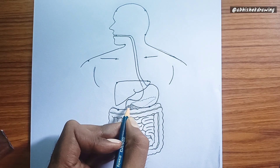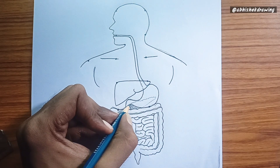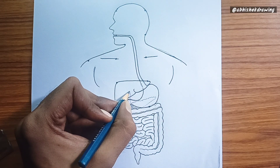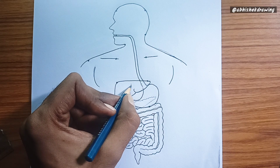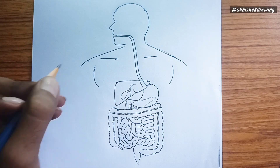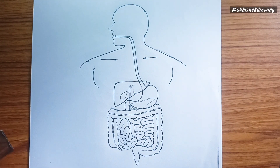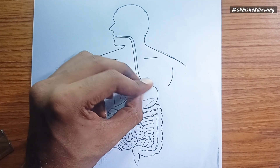Accessory organs. Salivary glands produce saliva to moisten food and start carbohydrate digestion. Liver produces bile, which helps in fat digestion. Gallbladder stores and concentrates bile.